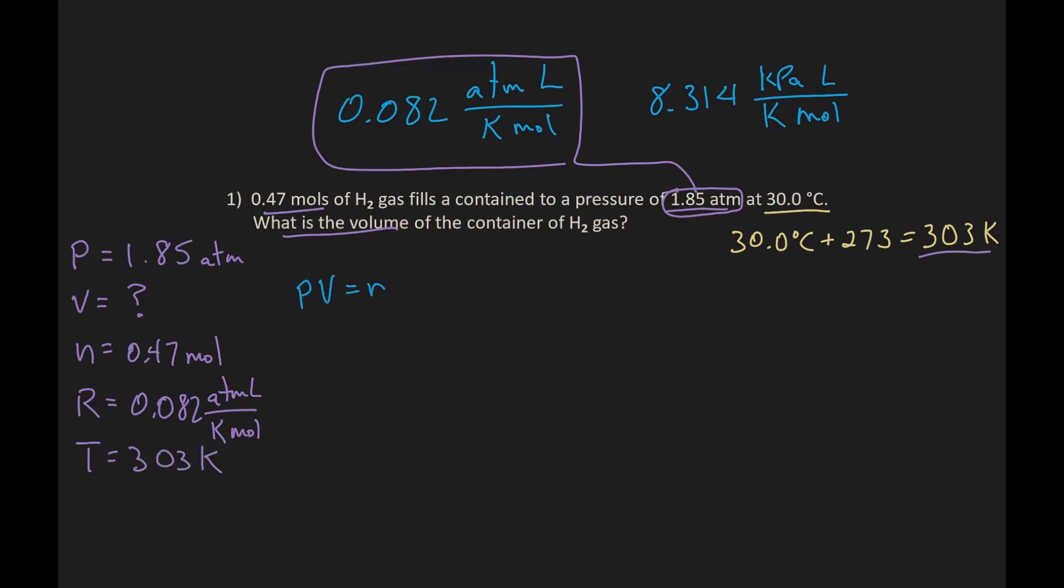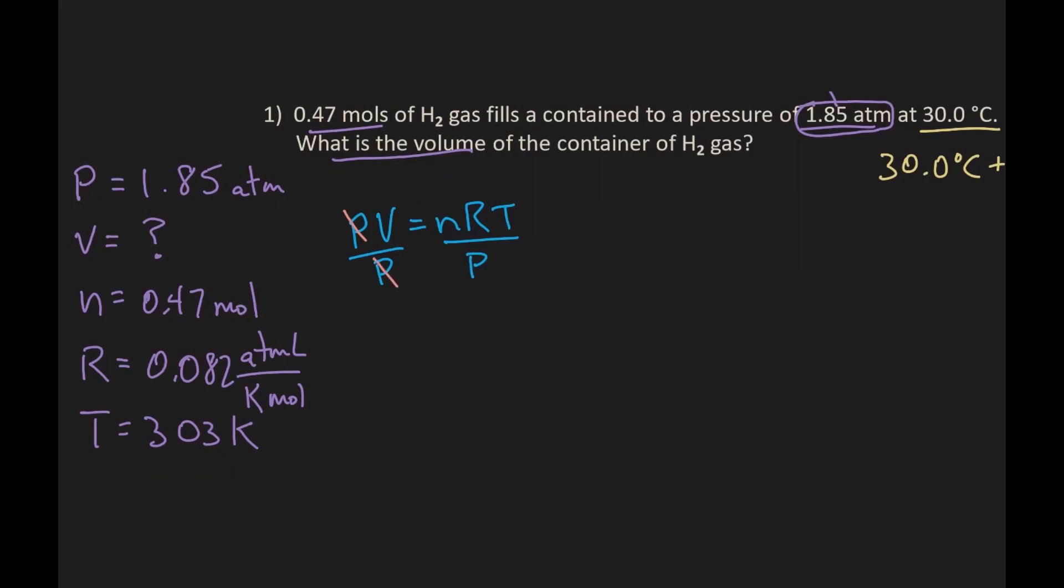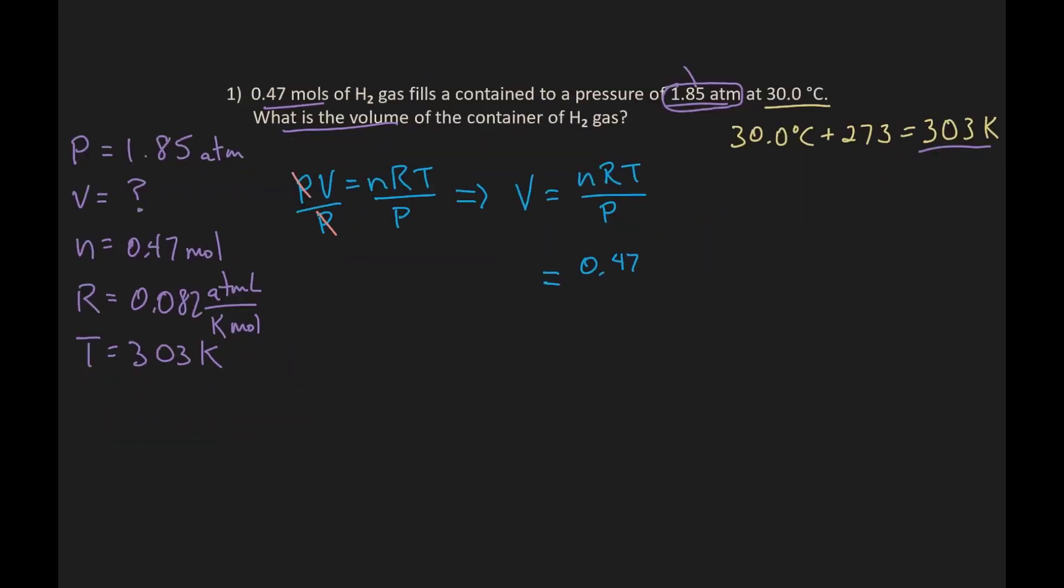Let's rearrange PV equals NRT to solve for volume by dividing both sides by pressure. The pressure cancels out on the left and we are left with volume equals NRT over P. So let's plug in all the values.